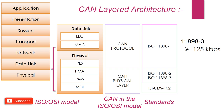Low-speed CAN allows data rates up to 125 kbps, which is used where the speed of communication is not a critical factor. High-speed CAN allows data rates up to 1 Mbps, which is primarily used in the power train and chassis area of the vehicle.